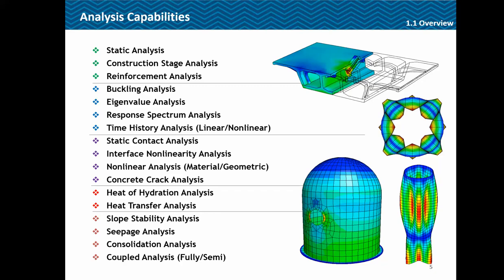These are the analysis capabilities in general. You can go for static analysis, construction stage analysis, reinforcement analysis, then buckling eigenvalue, response spectrum, and time history — whether linear or nonlinear. Then static contact analysis, interface nonlinearity, material and geometric nonlinear analysis, as well as concrete crack analysis. Finally there is heat of hydration, heat transfer, and a few geotechnical analyses like slope stability, seepage, consolidation, and coupled analysis.